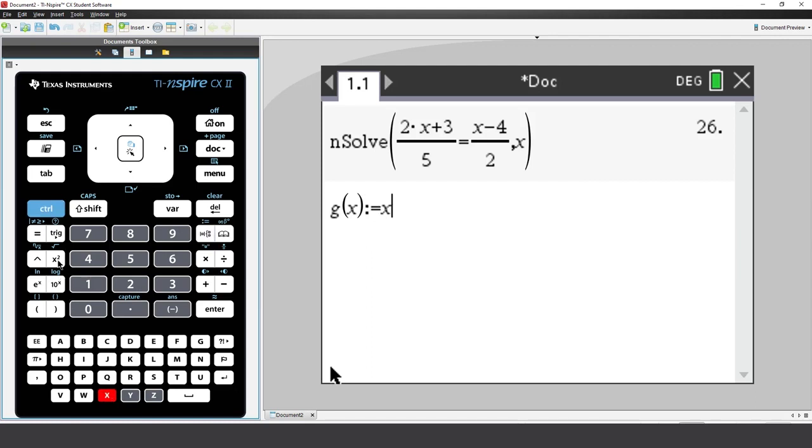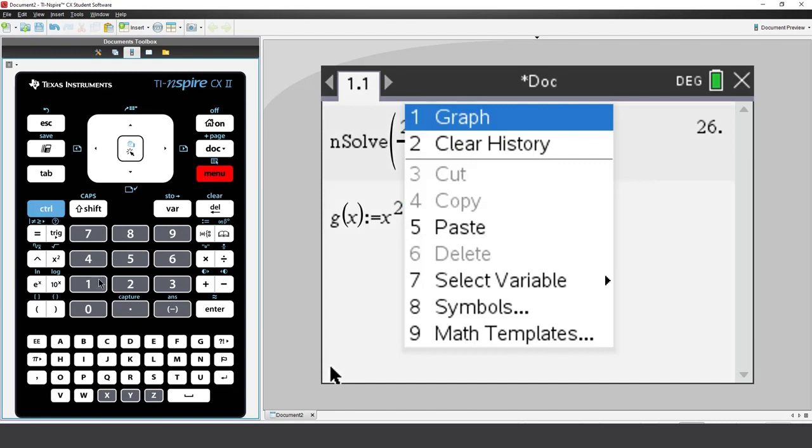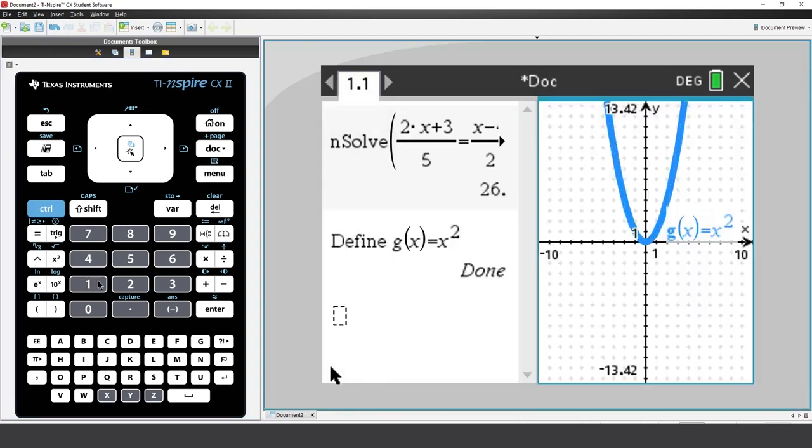Now, before I press Enter, try pressing Control and Menu again. Now, right mouse click. Now, I have the option to graph the function. Just press Enter.